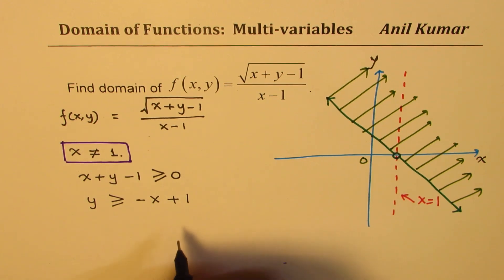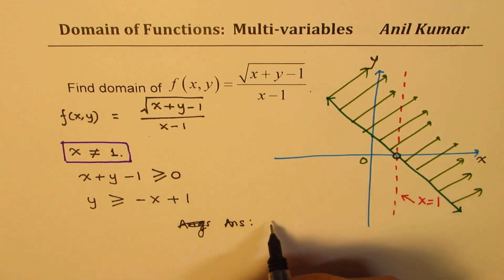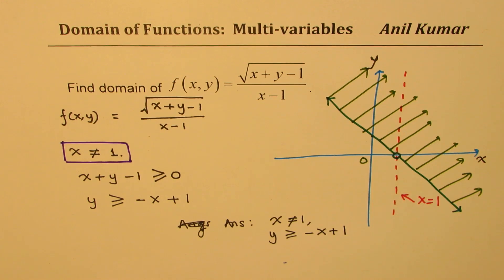So our answer here is that the domain is... So we have that the value of x is not equal to 1, and y is greater than or equal to minus x plus 1. So that is how we are going to answer.